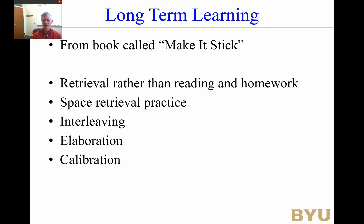The fourth principle is elaboration — describing what's going on. When you work through a problem with another person and explain what's happening, you get a deeper understanding. The fifth is calibration: trying to figure out what you don't know. When you work a problem, is it right or wrong? Calibration is about identifying where your misconceptions are.